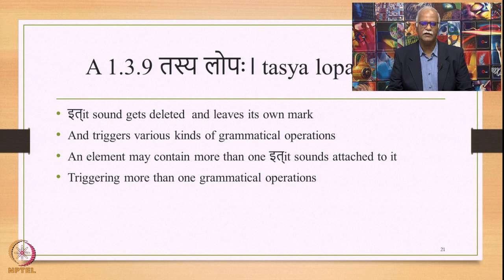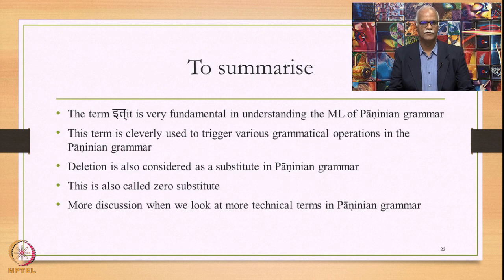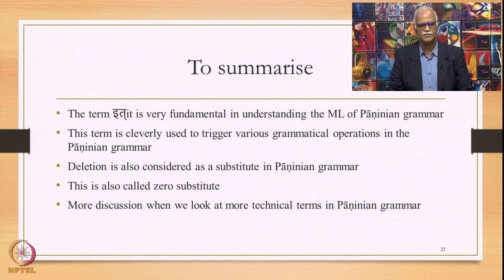We have also observed that an element may contain more than one Ith sound attached to it — for example, 'touch', triggering more than one grammatical operation: T triggered the operation of feminine suffix, and Ch would trigger the operation of accent and so on. To summarize this discussion: the term Ith is very fundamental in understanding the meta-language of Paninian grammar, and is cleverly used to trigger various grammatical operations. Deletion is also considered as a substitute in Paninian grammar — this is also called zero substitute — and we shall study this further when we look at technical terms in the Paninian grammar.